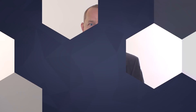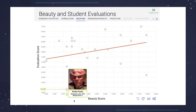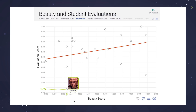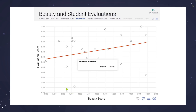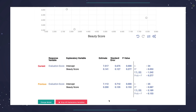Let's cover the first question: how to remove a point to make the relationship weaker. For example, remove this point. You would have seen a flatter line and our slope go down from 0.2 to 0.14.